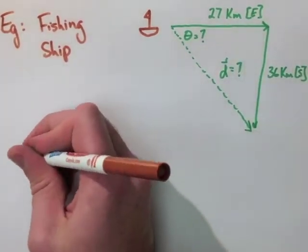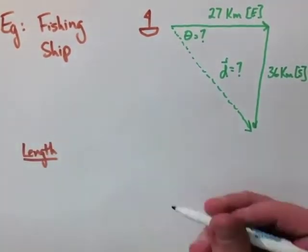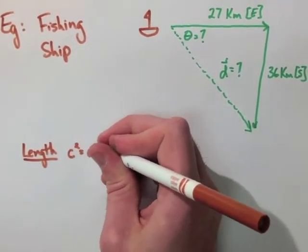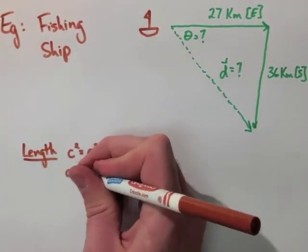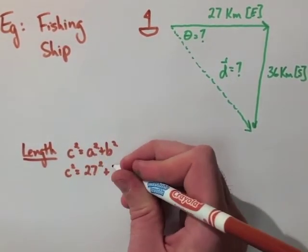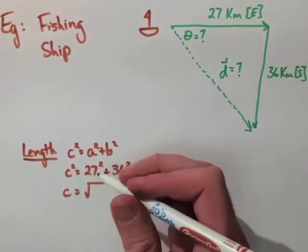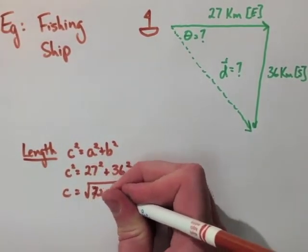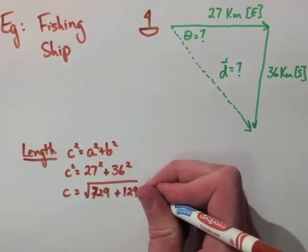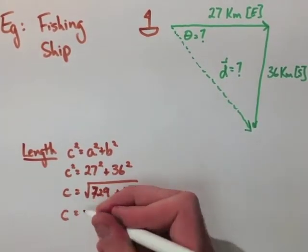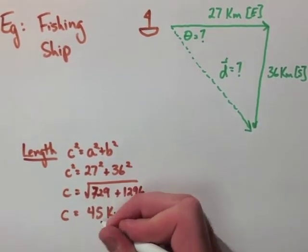To find the length, we'll use Pythagorean theorem because it's a right angle triangle. So we have C squared equals A squared plus B squared. So then we get C squared equals 27 squared plus 36 squared. And when it's all said and done, we're going to find out that C is equal to 45 kilometers, or 45 if we're just using the scalar quantity.